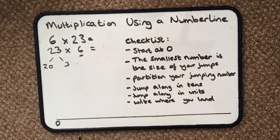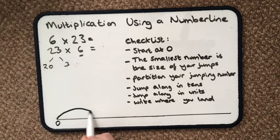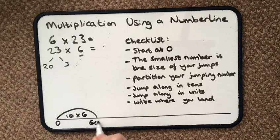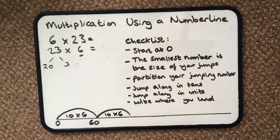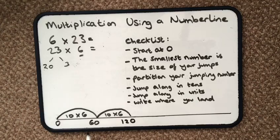Then it says jump along in tens, so I've got two tens jumps to make. One jump of 10 times 6 - this is the size of my jump - then another jump of 10. So 60 plus another 60 I know is 120 because six tens plus another six tens is 12 tens.